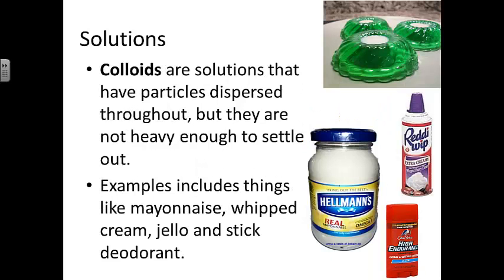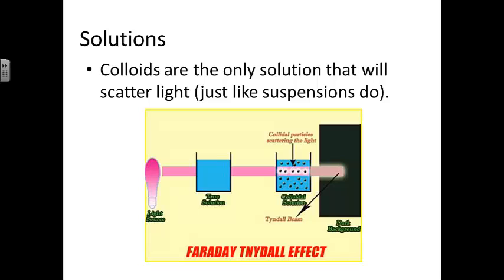Solutions include a category of homogeneous mixtures known as colloids. Colloids are solutions that have particles dispersed throughout, but they're not heavy enough to settle out. However, they are large enough that they will scatter light. Examples of colloids include things like mayonnaise, whipped cream, jello, and stick deodorant. Colloids are the only solutions that will scatter light, just like suspensions do.